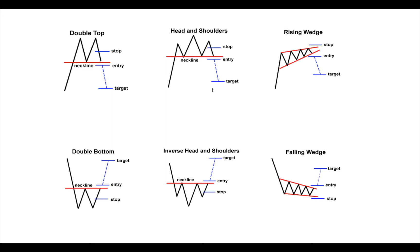A rising wedge can also be a reversal pattern — this is different from the falling wedge continuation pattern we covered earlier. Here you'll see an ascending line on the bottom and an ascending line on the top, but the top is ascending at a much lesser angle. Stop loss is above the last point, entry is on the breakout, and the target is the distance between the start and end of the wedge.